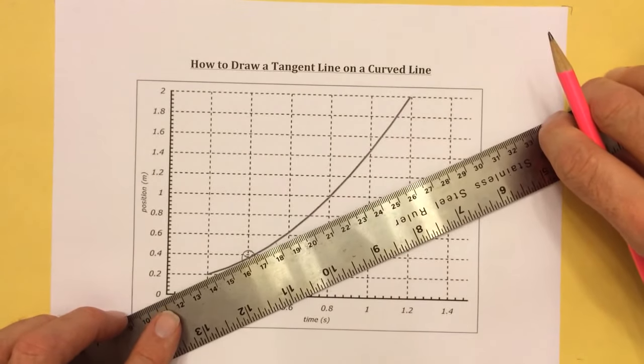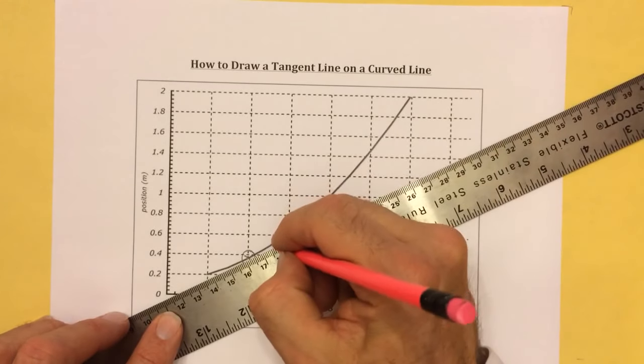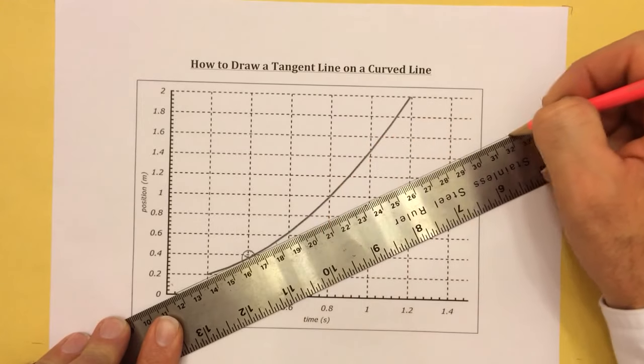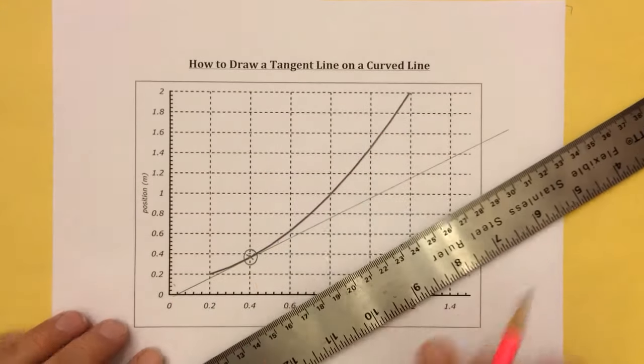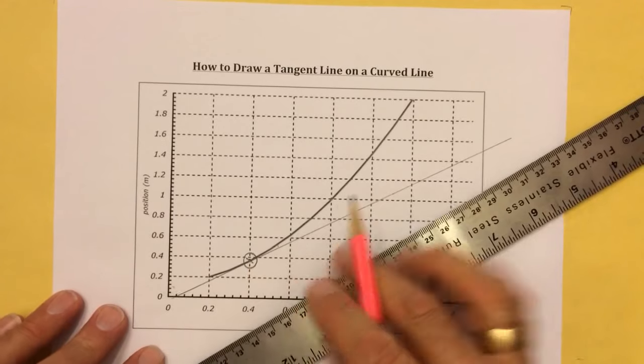So I'm going to adjust this so this space is the same as that. So this would be the tangent line that goes right through that data point.